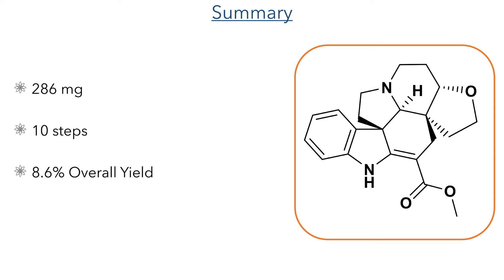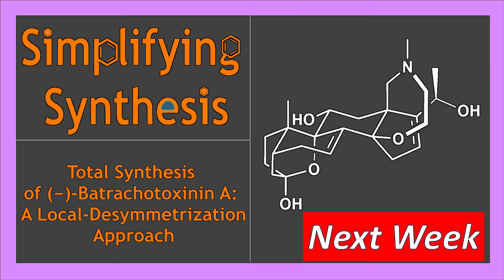Highlights of this synthesis are the highly selective bromocyclisation, the palladium-promoted C-H activation C-alkylation cascade, and the transannular oxidative Mannich reaction, which offers an interesting approach to synthesizing these complex polycyclic structures. That's everything from this week's Simplifying Synthesis. If you enjoyed this video, please like and subscribe, and if you have anything you'd like to see, let me know in the comments below. I'll be back next week where I look at the total synthesis of batrachotoxin A.